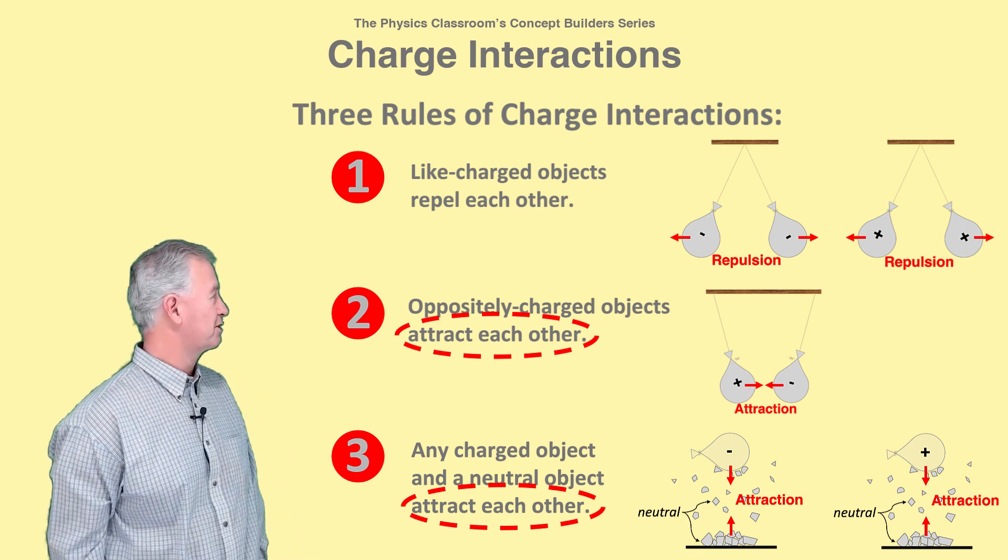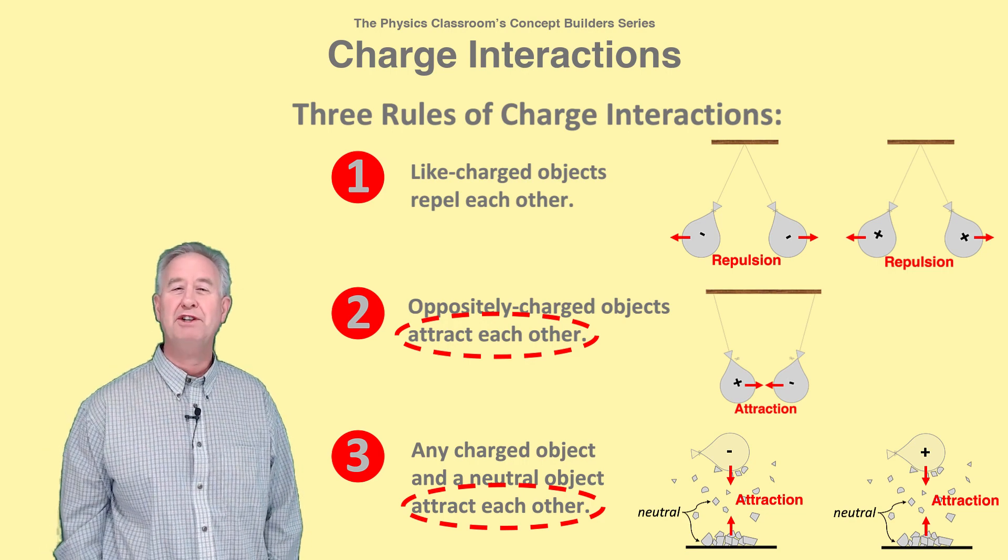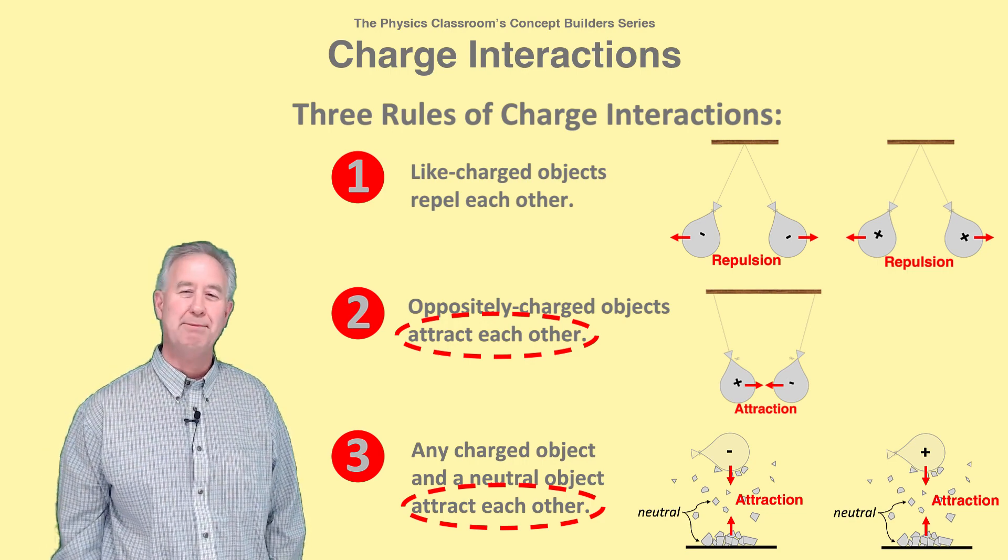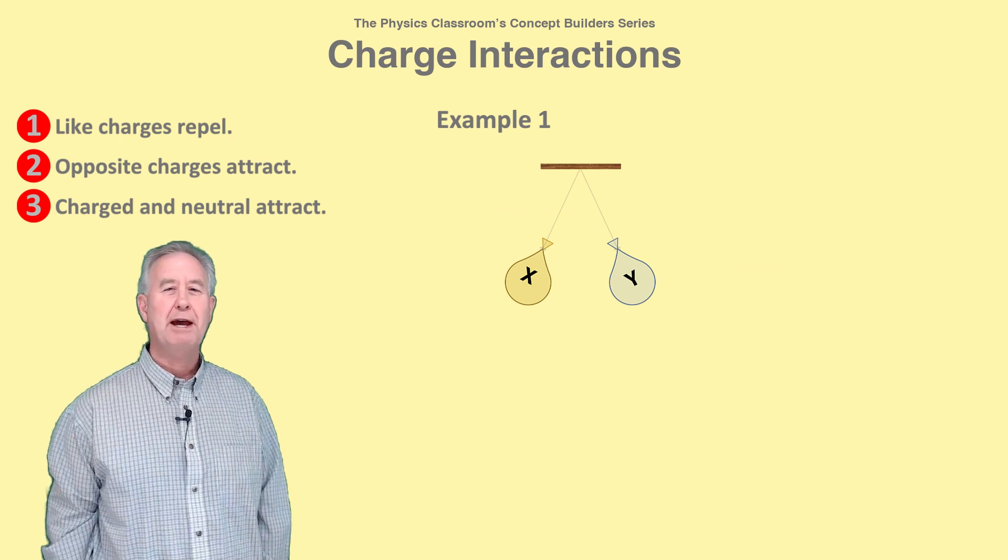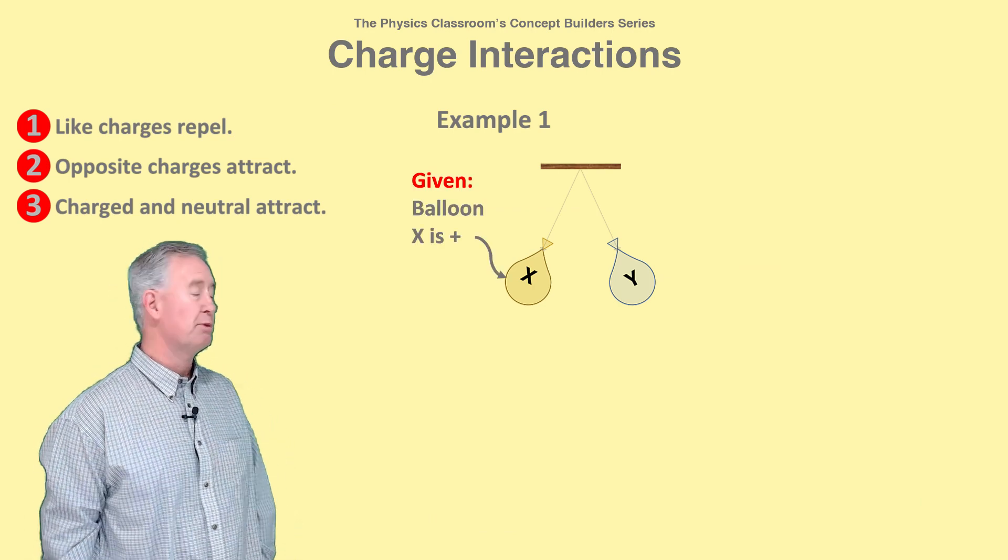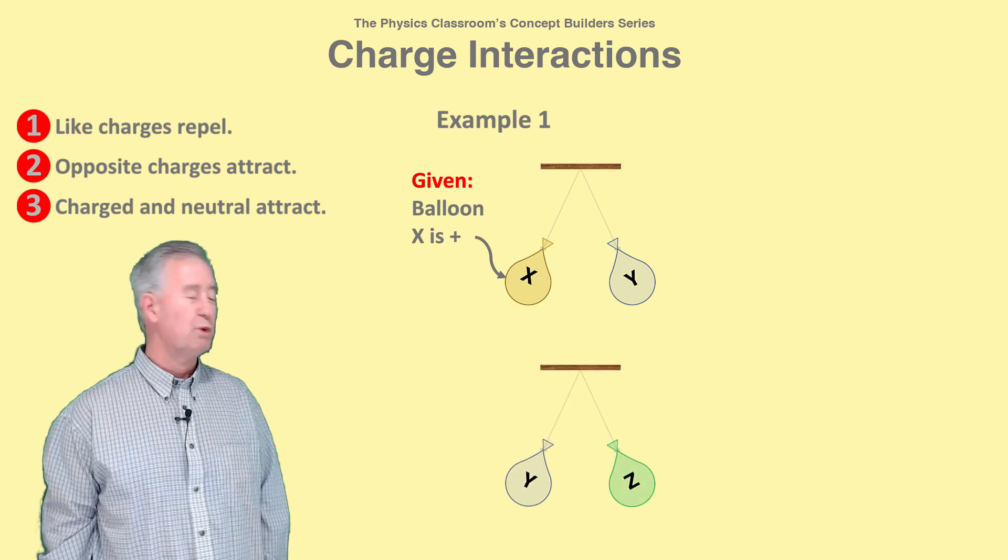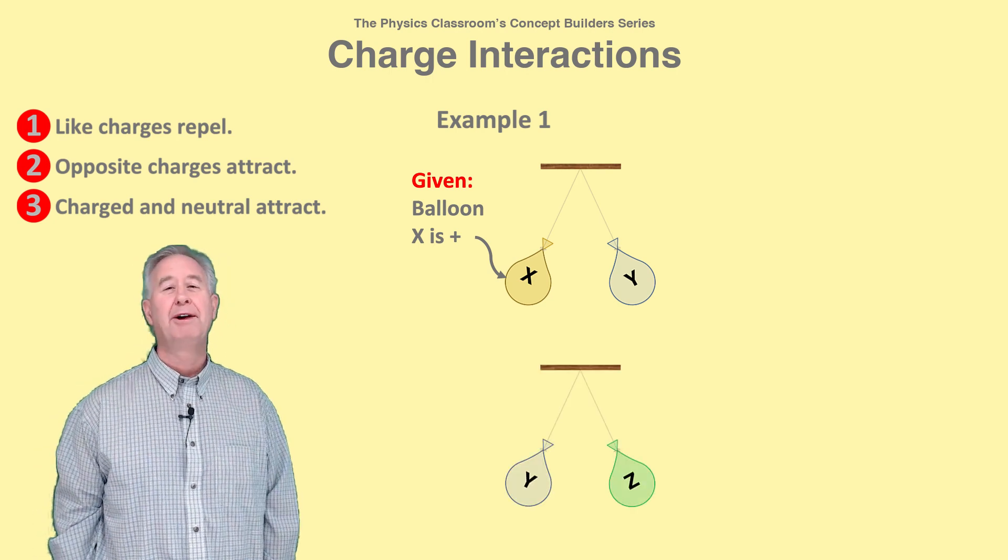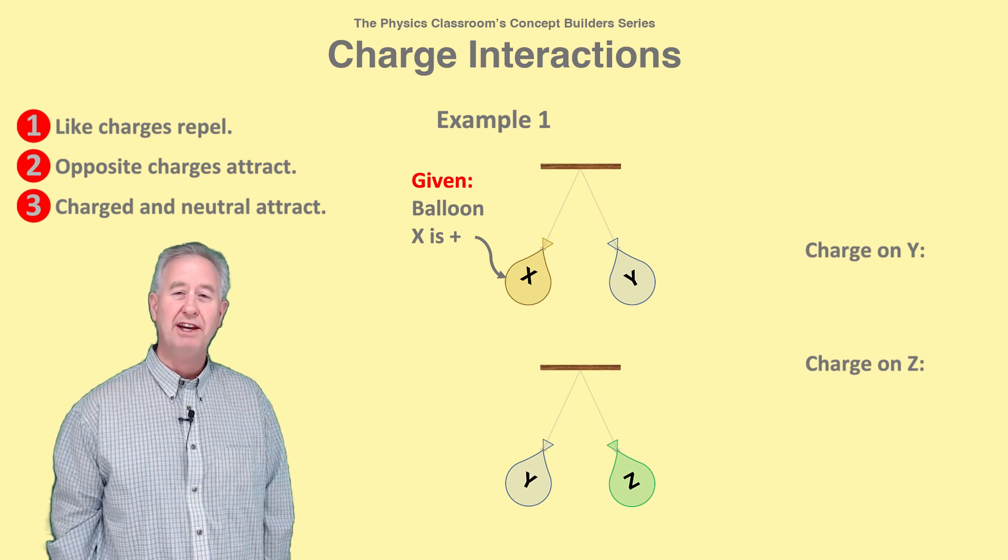Now let's mix our rules one, two, and three with some logical reasoning to solve four example problems. In example one, we know balloon X is positive and X and Y repel. Balloons Y and Z also repel. What is the charge on balloons Y and Z?